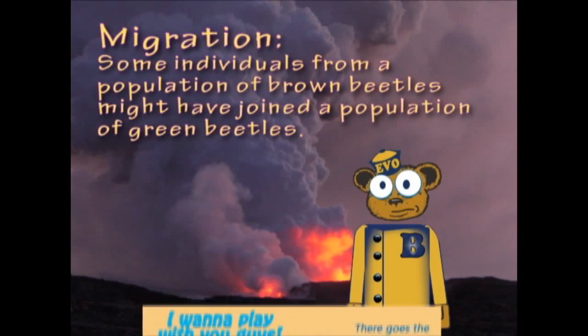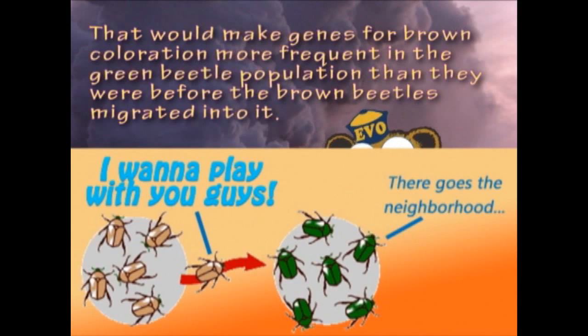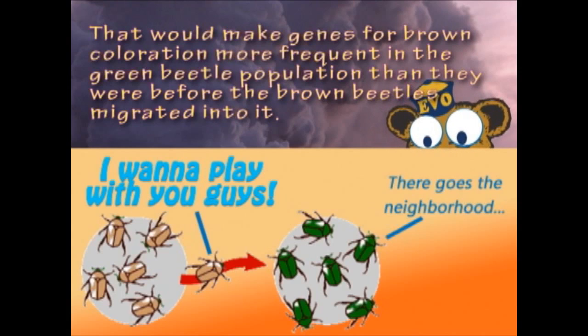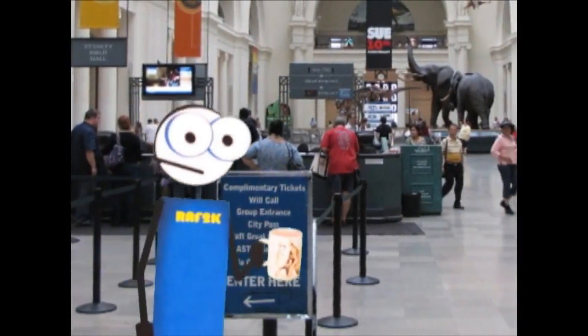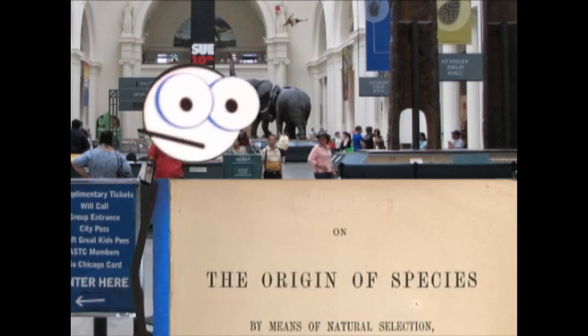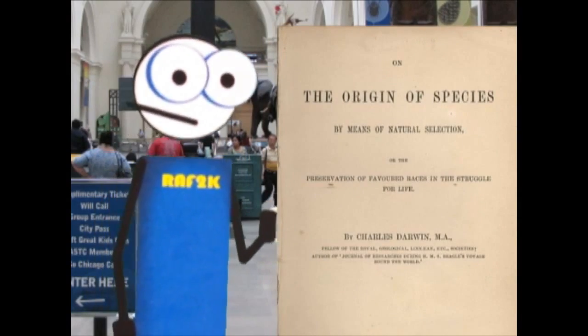Migration: Some individuals from a population of brown beetles might have joined a population of green beetles. That would make genes for brown coloration more frequent in the green beetle population than they were before the brown beetles migrated into it. Do I need to say how this doesn't represent new genetic information? The brown beetles who moved into the all-green neighborhood were already brown beetles — they already existed. Let's all take a second and remember that evolution is supposed to explain the process by which bacteria became wolves and cabbages. Uncle Chuck's book wasn't called Moving to a New Neighborhood of the Species — it was Origin of the Species. That is what this theory is supposed to explain. Thus, migration doesn't quite do the job.